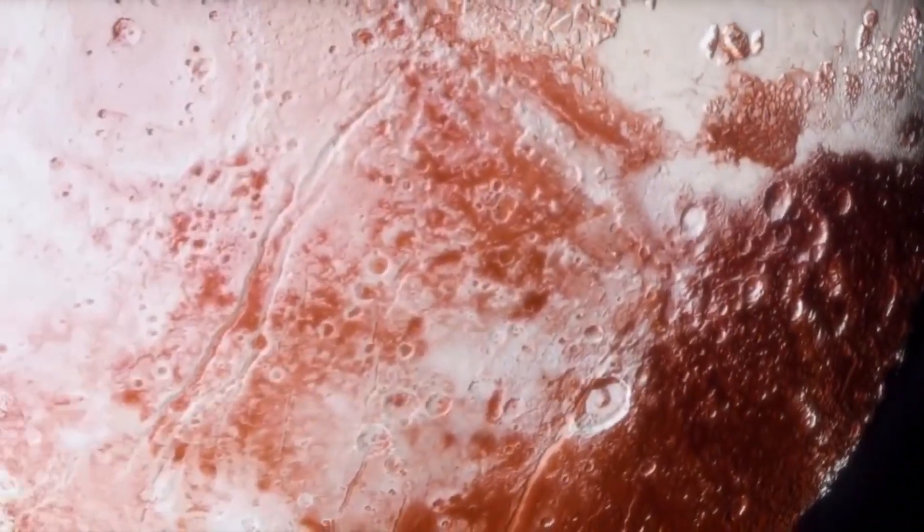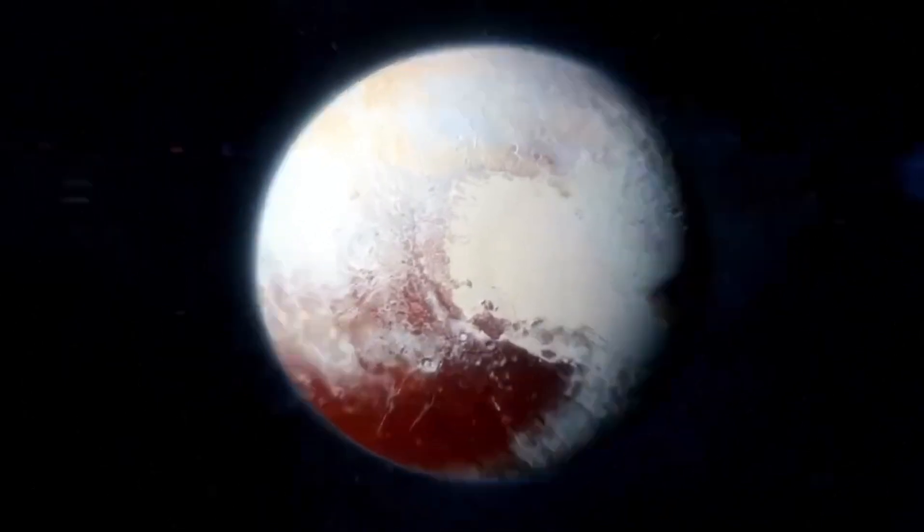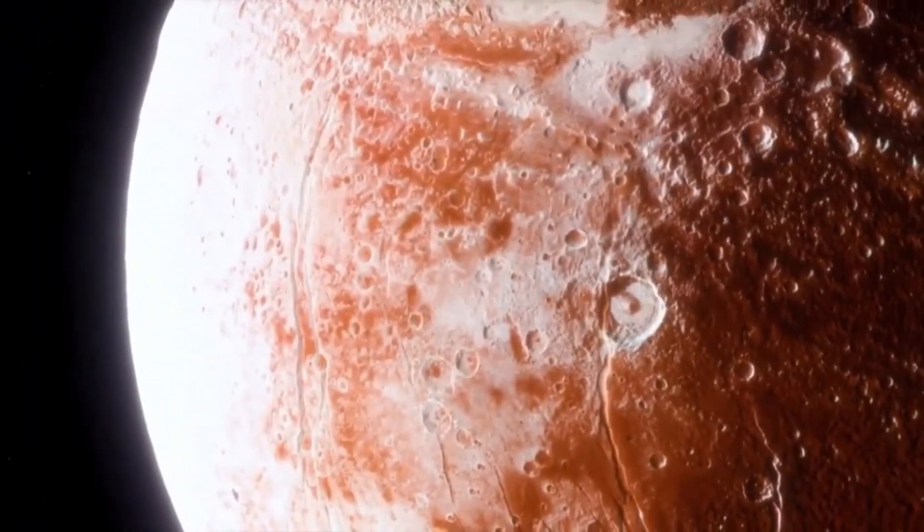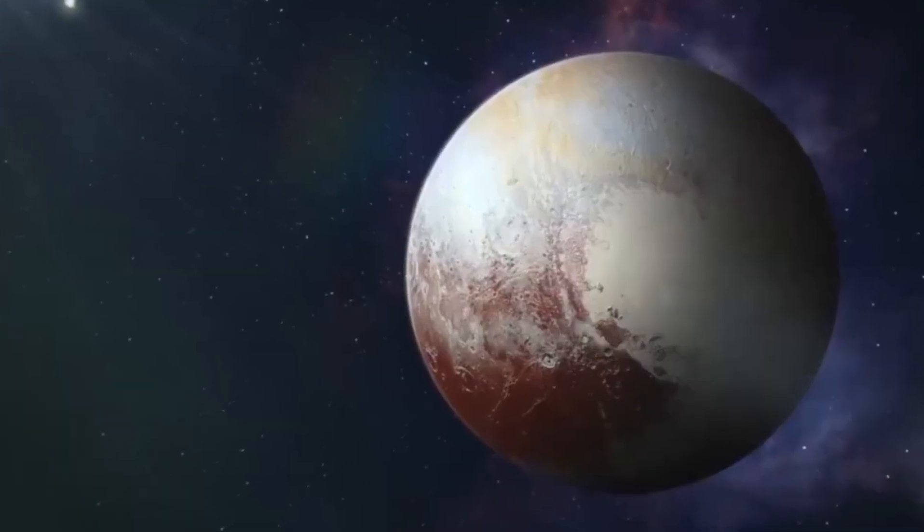Titan is also the only moon in our solar system that has an atmosphere that consists mainly of nitrogen. On the surface, there are so-called methane seas which consist of liquid hydrocarbon. Thus, Titan is also the only celestial body apart from the Earth on which accumulated liquid can be found.